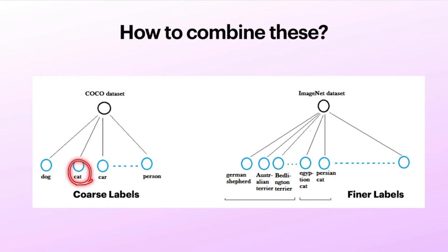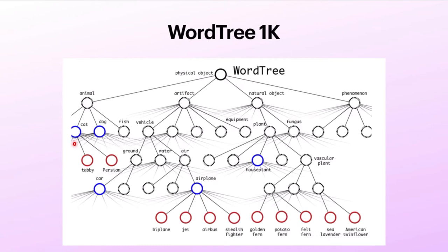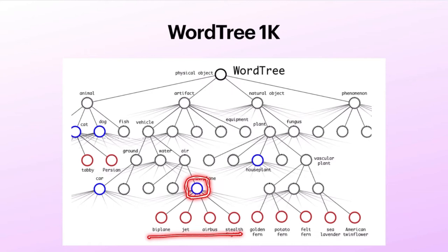That is what they have done with the WordTree dataset. The blue circles are actually COCO dataset labels and the red ones are ImageNet dataset labels. They have actually grouped these — for example, different types of aeroplanes are categories available in ImageNet and are assigned to a parent class label from the COCO dataset. So they trained the DarkNet 19 model, which is used in YOLO V2, on this particular WordTree dataset.